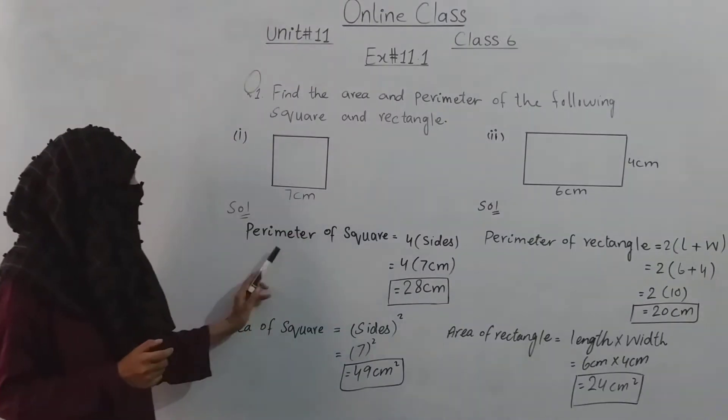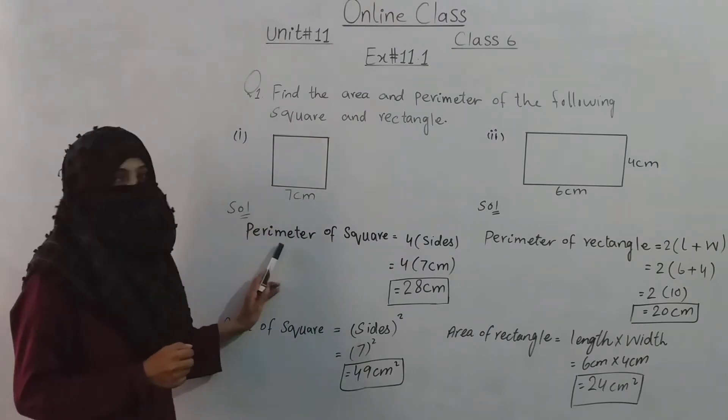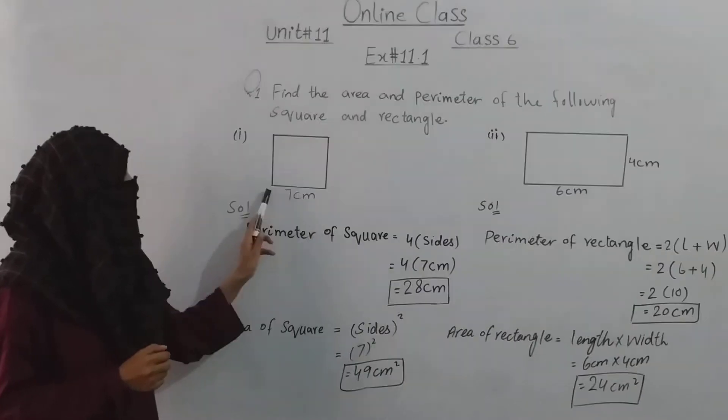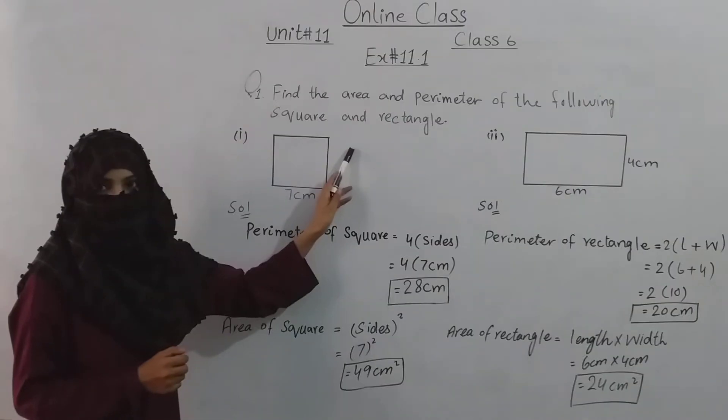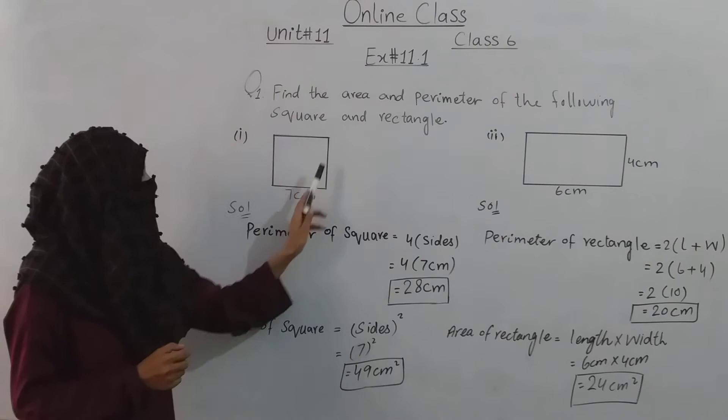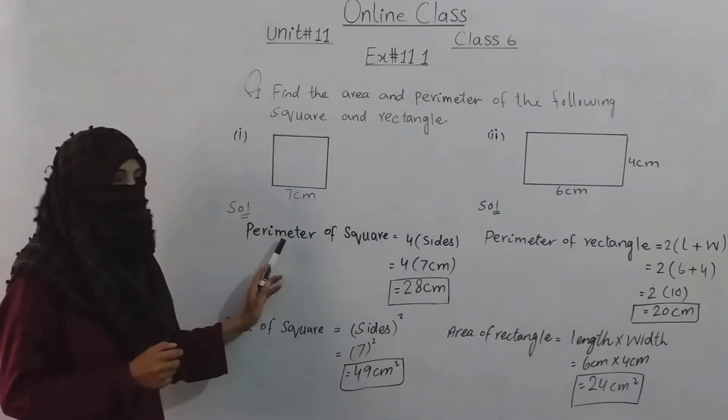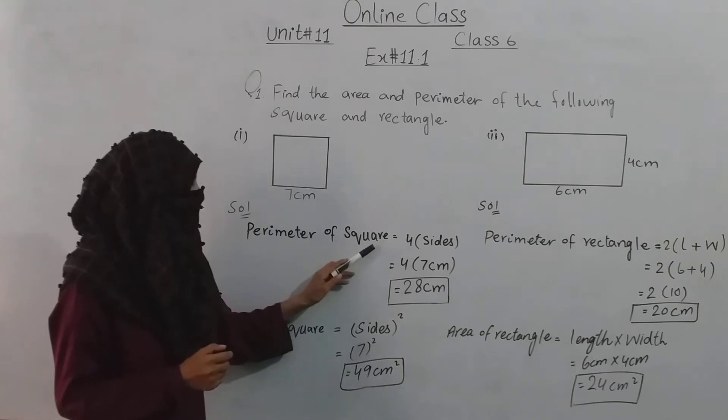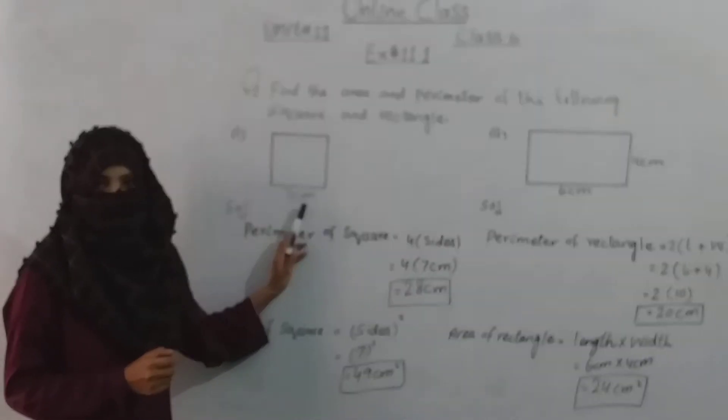Now we need to find the perimeter. What is perimeter? I have told you before that the perimeter is the outside boundary of a shape. Now we will find the perimeter of the square.